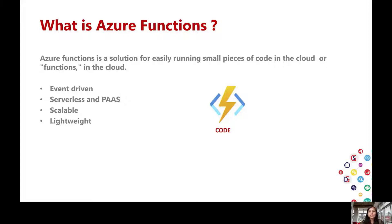Azure Function has similar characteristics to a normal function. Apart from that, Azure Function is event-driven — it is called when triggered by a particular event. Once a particular event triggers, the piece of code will execute. It is also serverless and platform-as-a-service, so you don't need to worry about infrastructure, a web server, or any configuration. Your code will easily deploy and execute in the cloud.